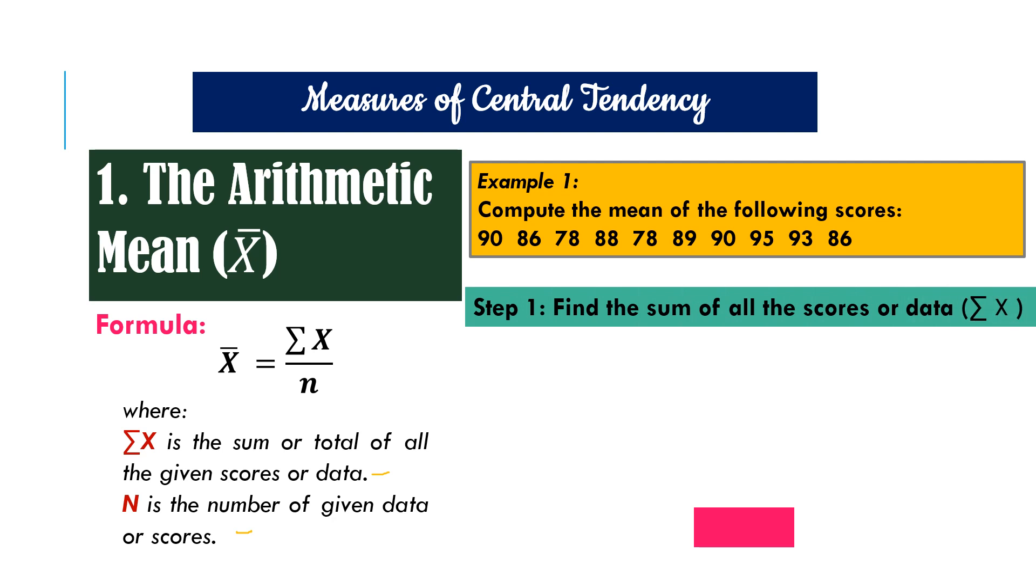There are steps that we can follow to solve for arithmetic mean. So the first step is for us to find the sum of all the scores or data for this symbol, the summation of x. To do that, we simply add each of the scores. So we have 90 plus 86, and so on until the last score, which is 86. When we add all of those, the total is 873.